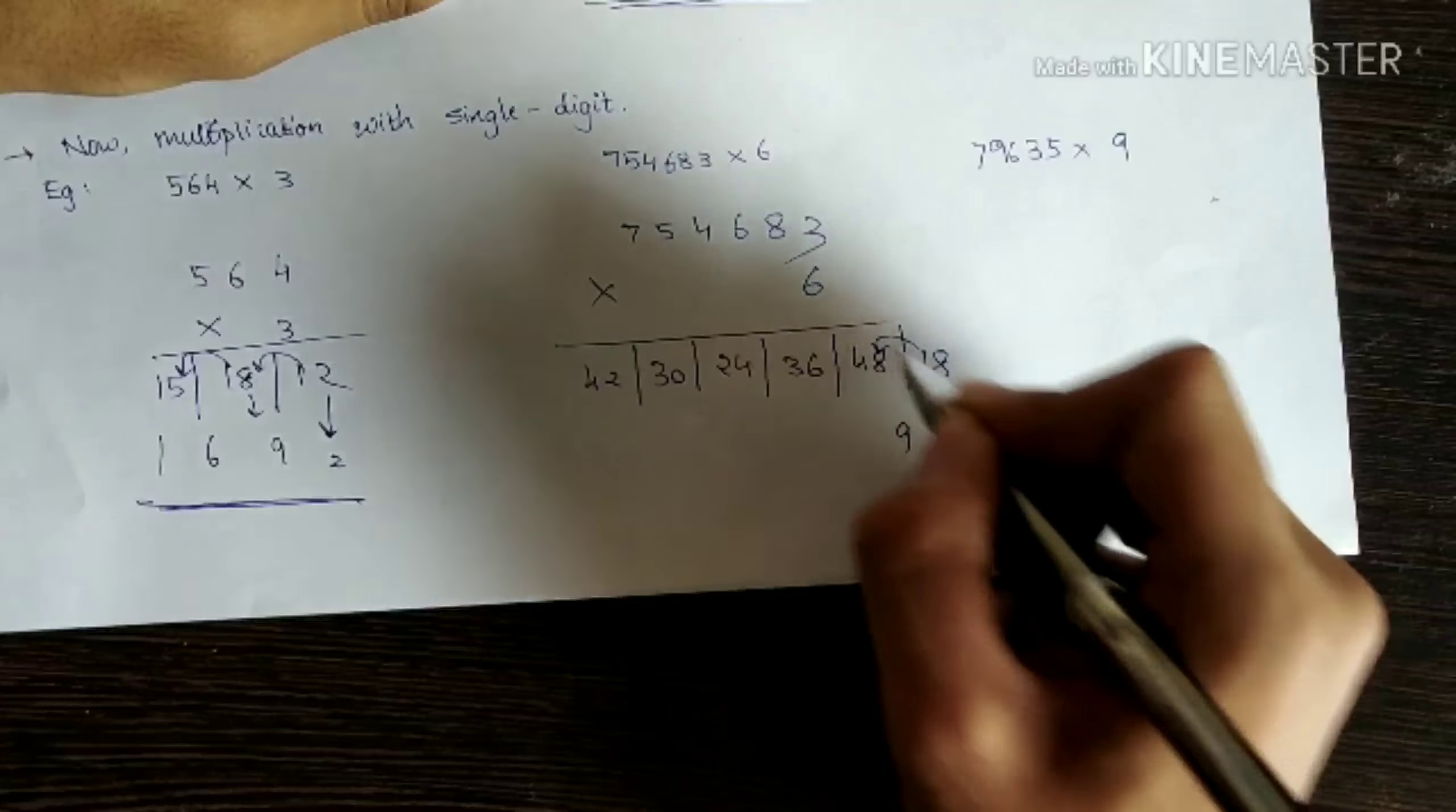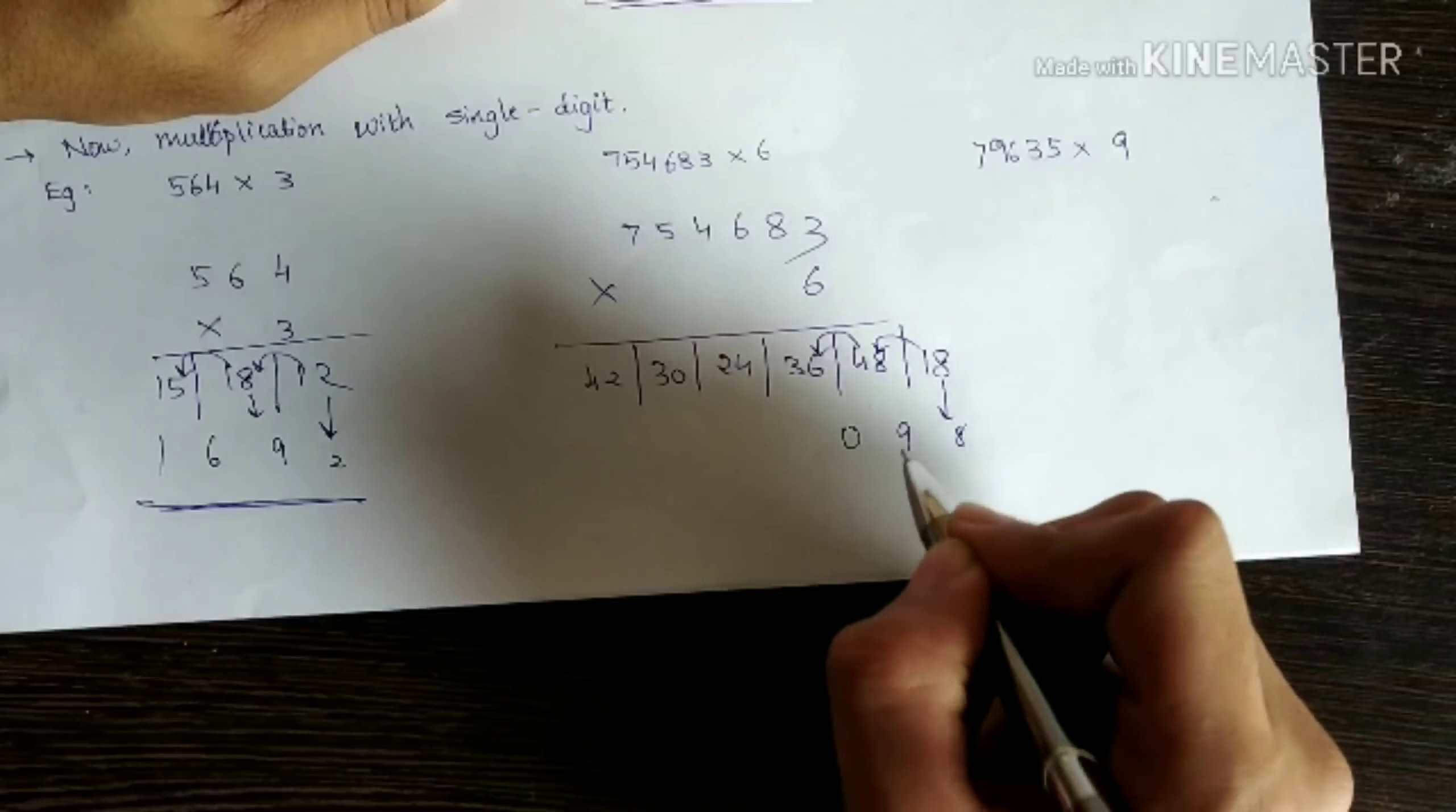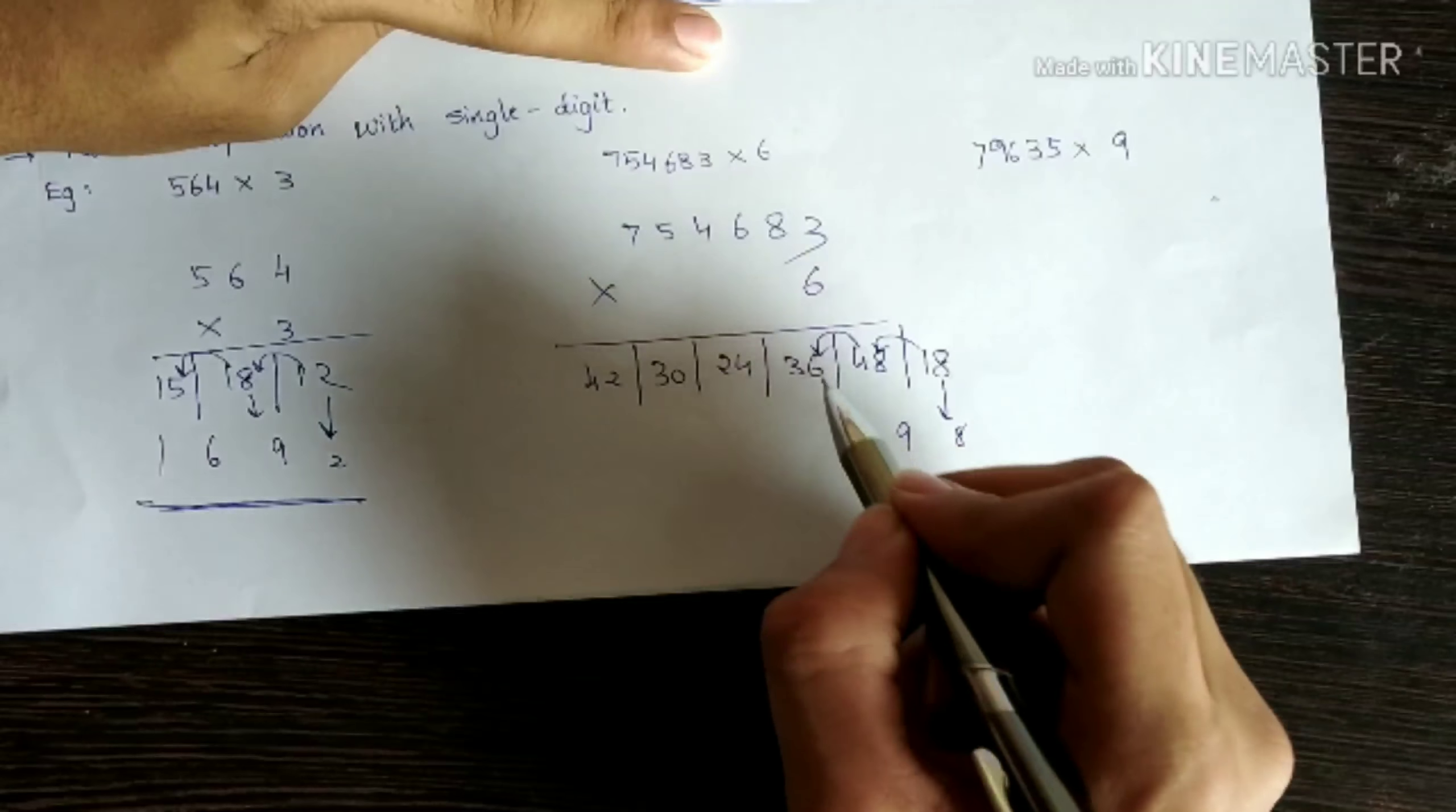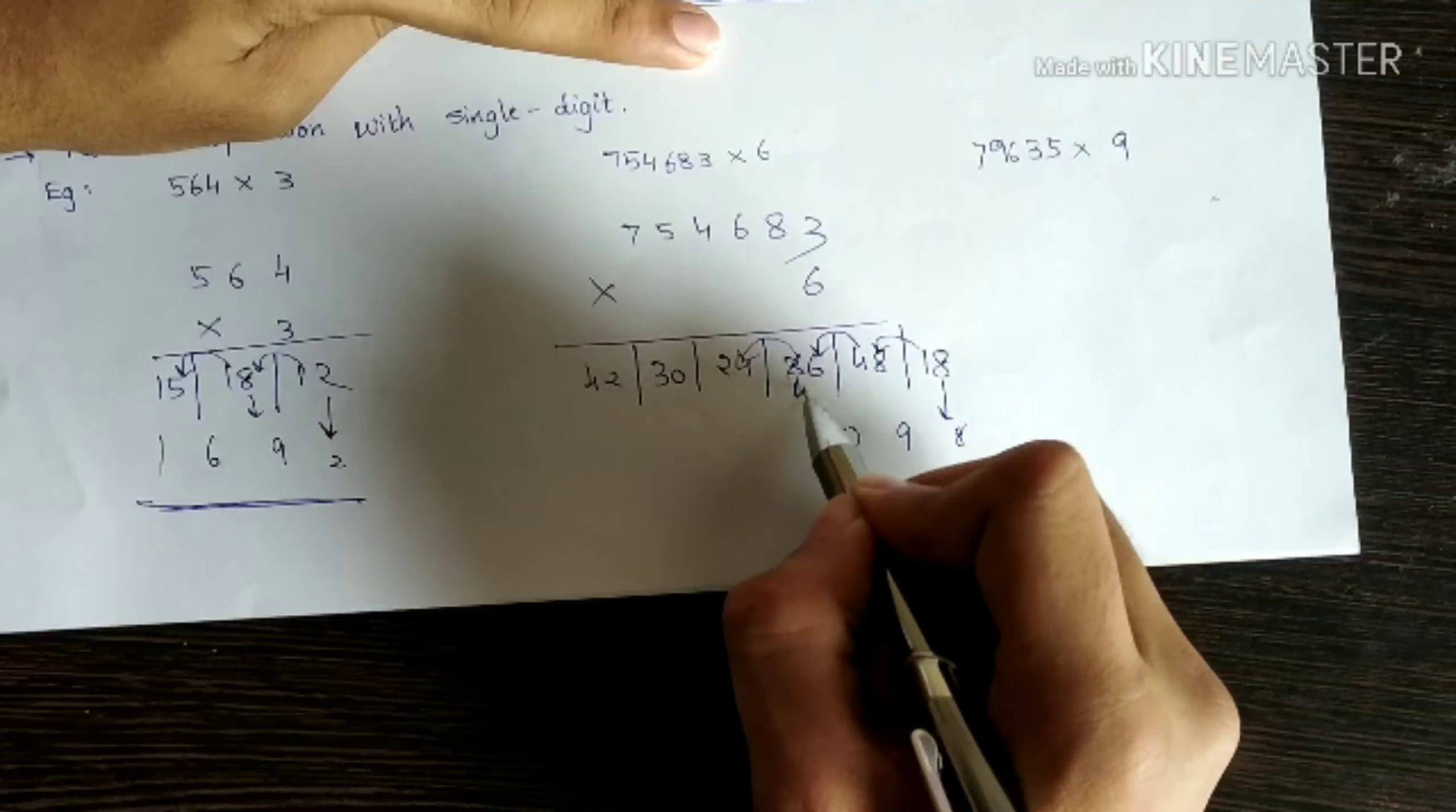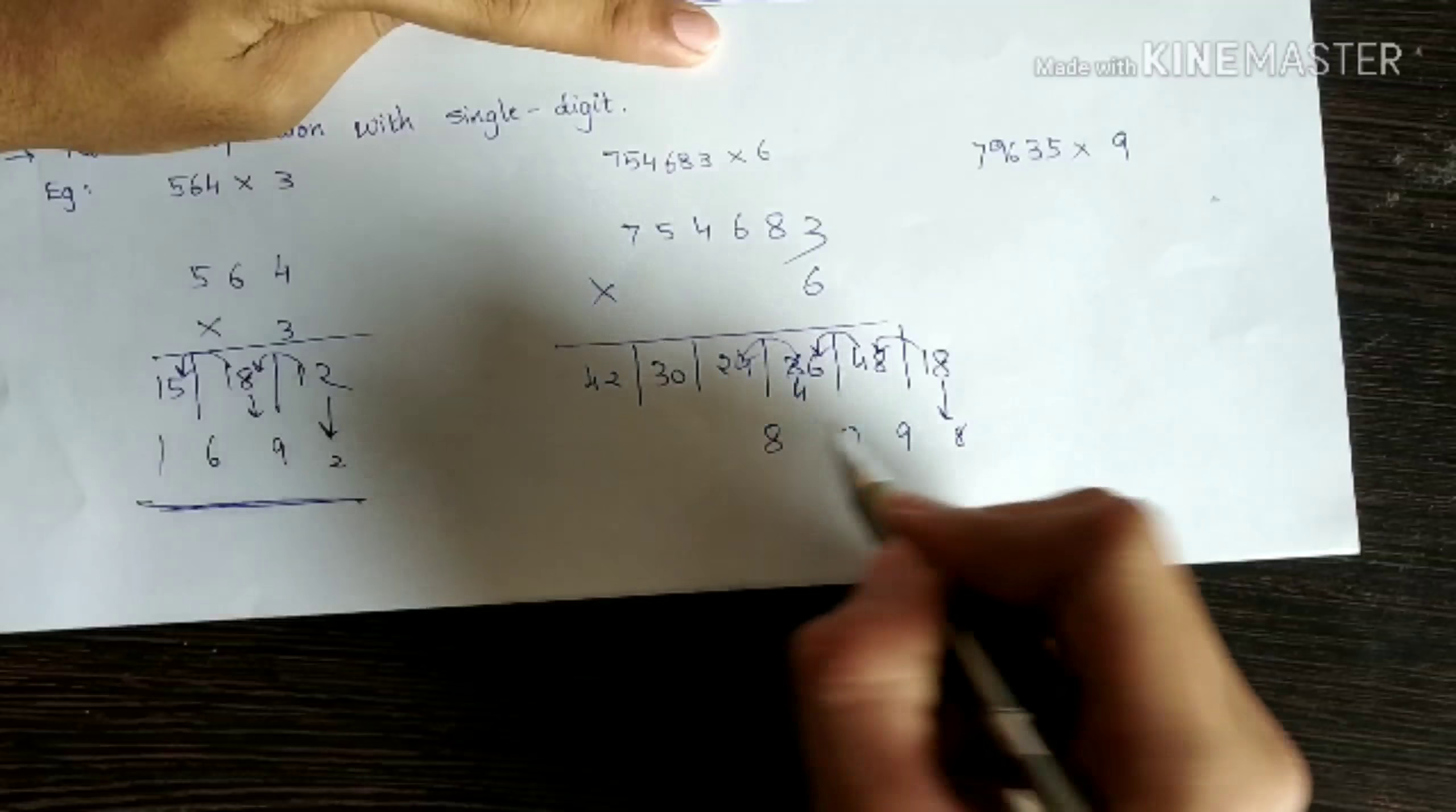Drop eight. One plus eight is nine. Four plus six is ten. Carry one. Put zero. One plus three is four. Four plus four, this becomes four.